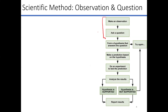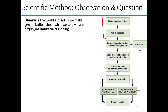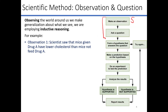Let's take a look at observations and questions. When it comes to observations, basically we want to see or notice something — something is standing out to us. When we make our observations, they typically have to do with our five senses: smell, taste, sight, and so on. An example of an observation: a scientist saw that mice given drug A have lower cholesterol than mice not given drug A. So we're noticing that mice taking this drug have lower cholesterol than those that do not — a great observation.